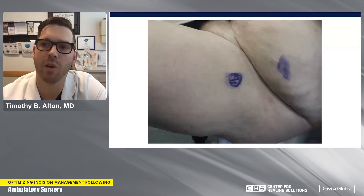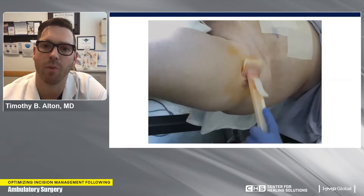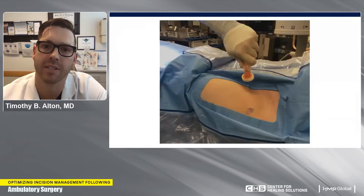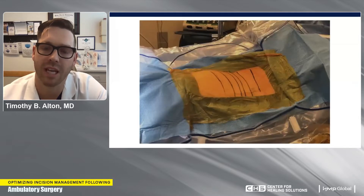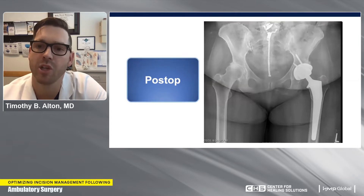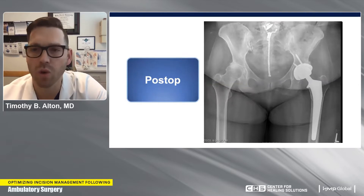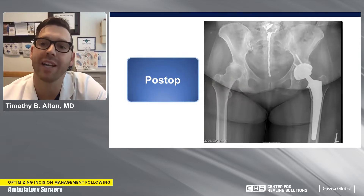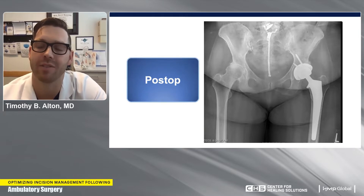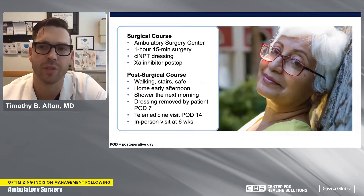This was her soft tissue envelope at the time of surgery. I commonly do anterior approach total hip replacements. I was able to tape some of that pannus out of the way. We did a standard prep with a chlorhexidine-based solution, then draped and re-prepped the skin. I put an ioband over the incision and then did a hip replacement for her. These are her postoperative images showing a left total hip replacement — it looks really good. I utilized a negative pressure dressing for her skin and a 10A inhibitor postoperatively.